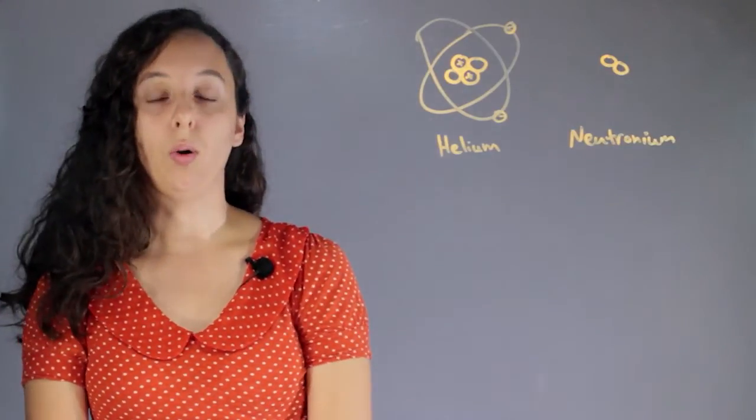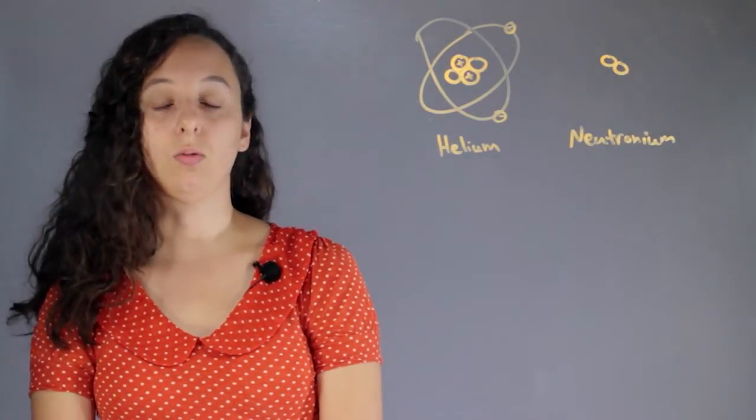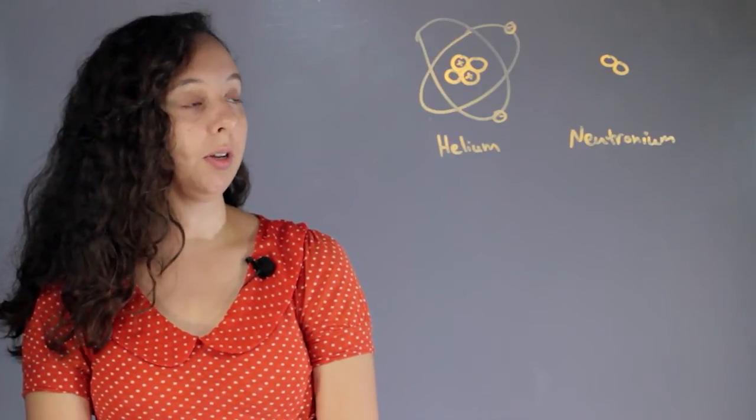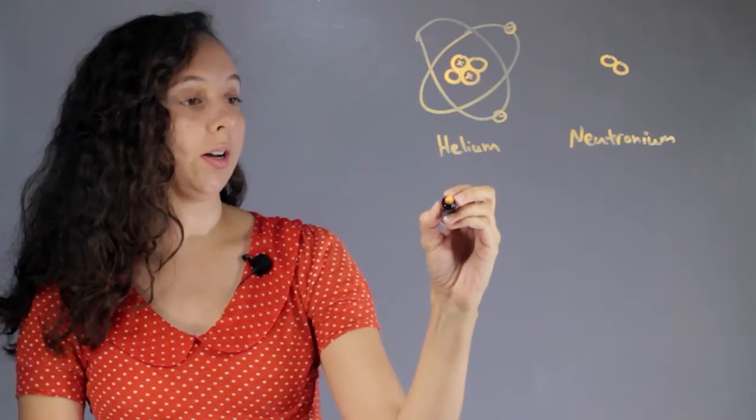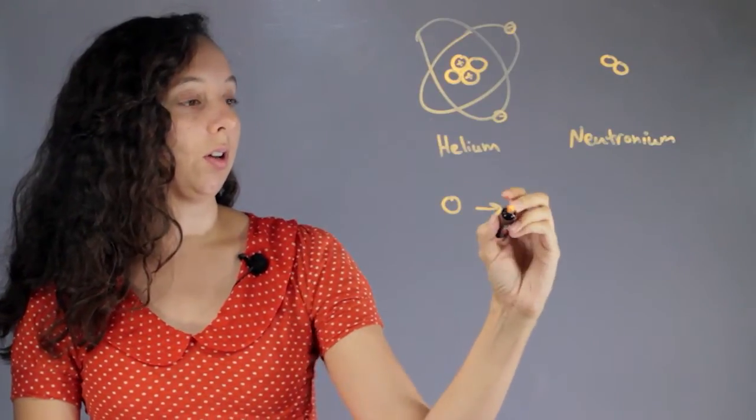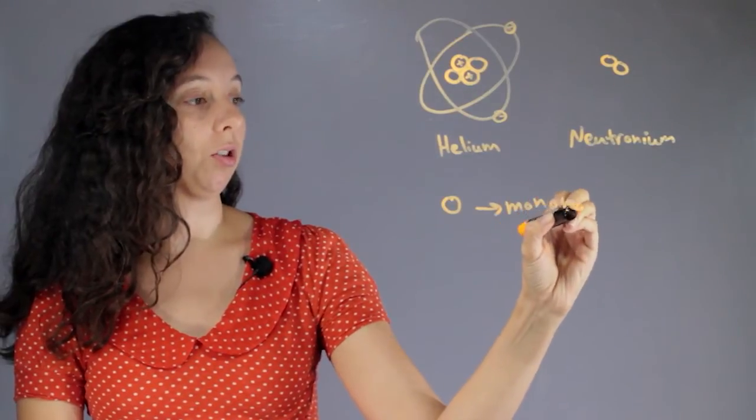When does Neutronium exist and what is its density? Well, the most common type of Neutronium is just one neutron hanging out by itself, otherwise known as mononeutron.